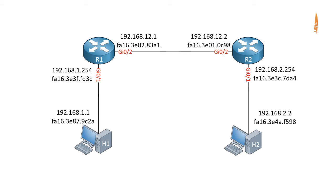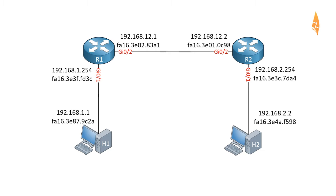IP routing is the actual forwarding of IP packets throughout a network. In this picture we have two host devices, host 1 and host 2, and there are two routers, R1 and R2.